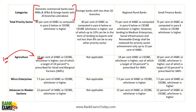For foreign banks with less than 20 branches, the target is also 40%, of which 32% can be in the form of lending to exports and not less than 8% to any other priority sector. For RRBs, the target is 75%, and for small finance banks the target is also 75%. For agriculture, the target is 18%, out of which 10% should be for small and marginal farmers.